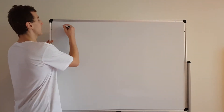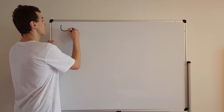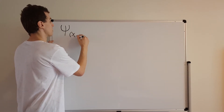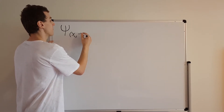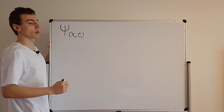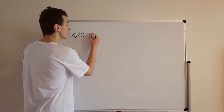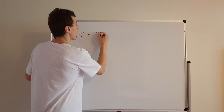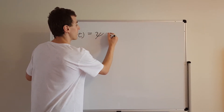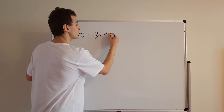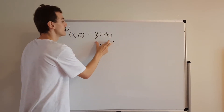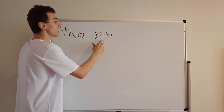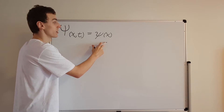First of all I'm going to write capital Ψ(x, t). This is the separable solution — it's a wave function, a solution to the Schrödinger equation. It has two parts to it. It is the product of a lowercase ψ(x) which just depends on x. There's no time dependence in this, and we can get these by solving the time-independent Schrödinger equation.